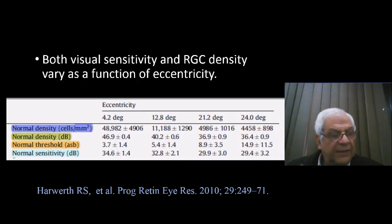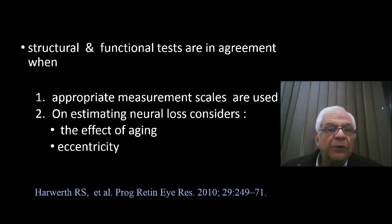As you can see here, values are expressed in count or in decibels, both for the sensitivity and the ganglion cell number. The authors came to the conclusion that structural and functional tests are in agreement when appropriate measurement scales are used. And when estimating neural loss, one should consider the effect of aging and the eccentricity.